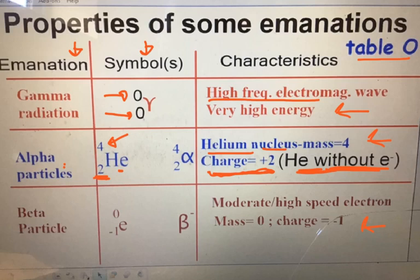Now beta particles — for our purposes you can think of them as electrons coming out of the nucleus. They have no mass and a charge of negative one. They have moderate to high speeds. Mass zero, charge negative one.